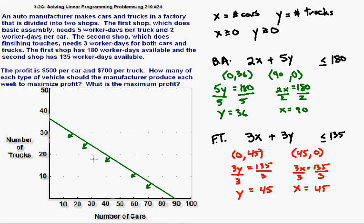So those two points determine the next line. So I have 0, 45, and 45, comma 0.